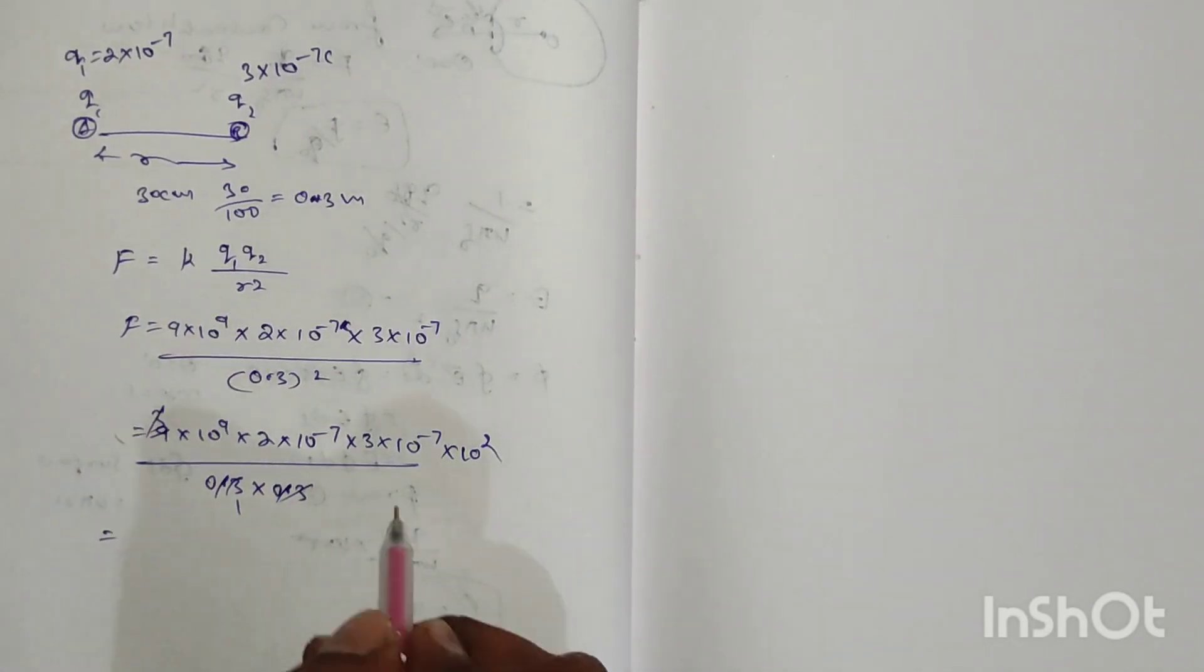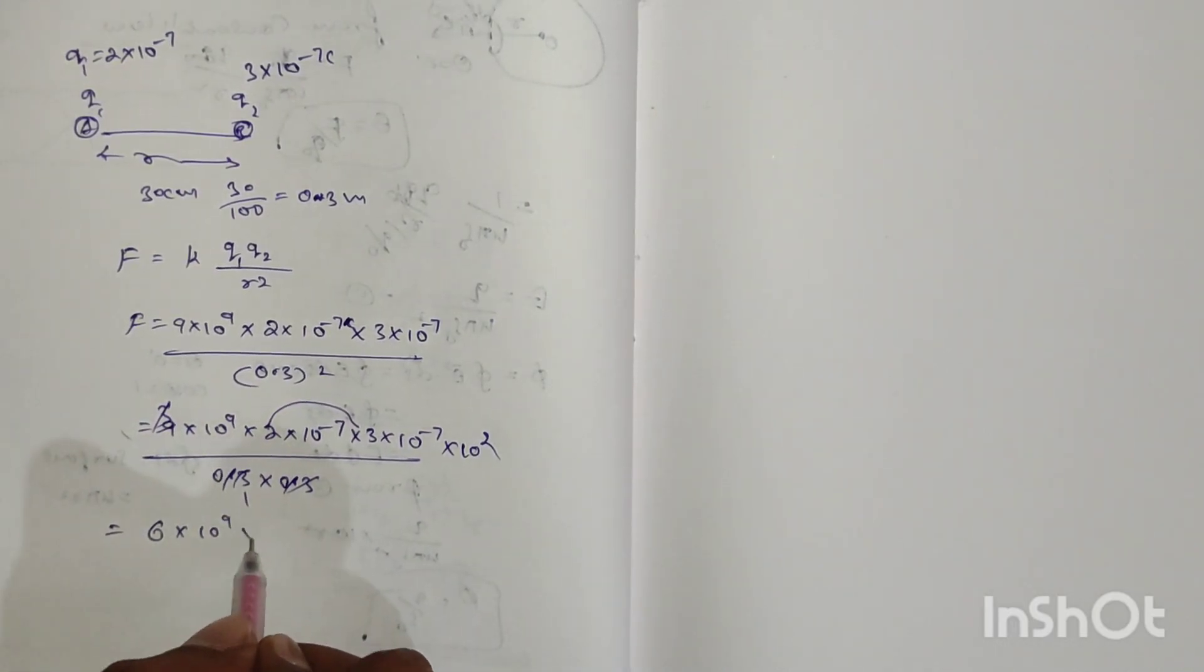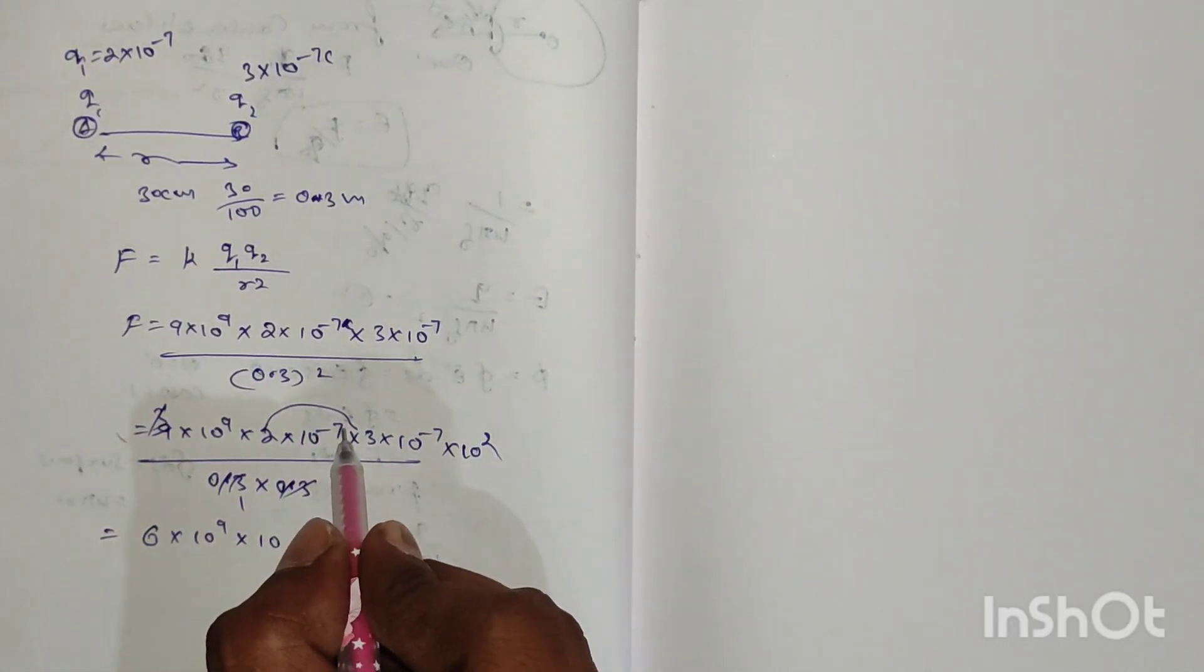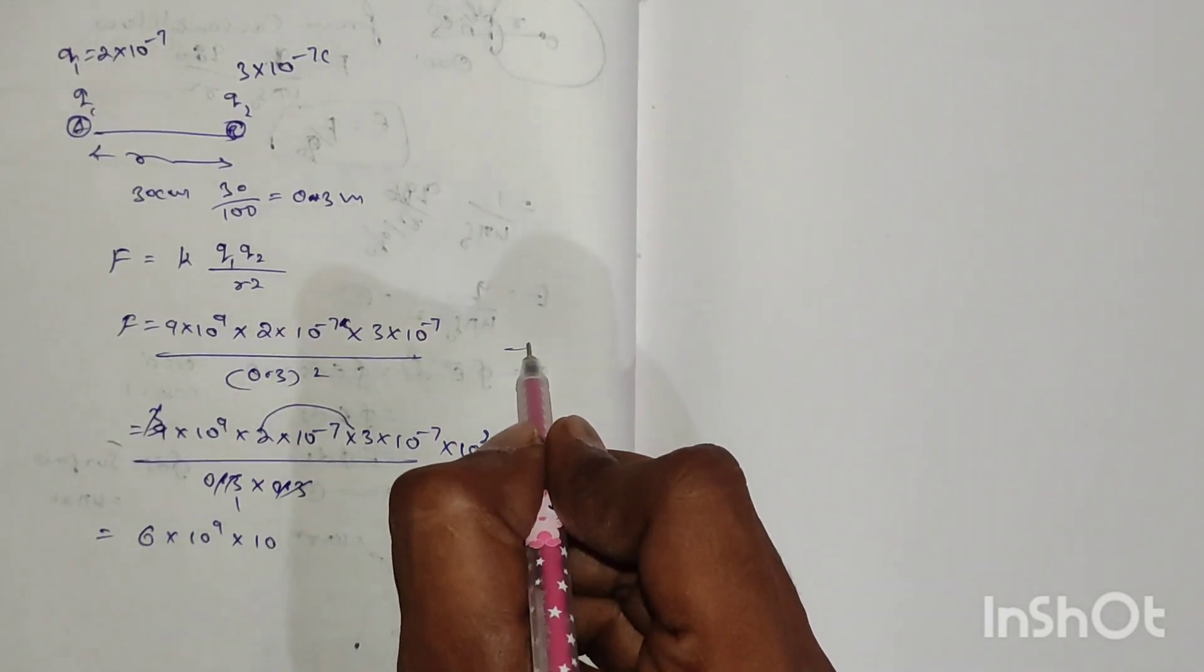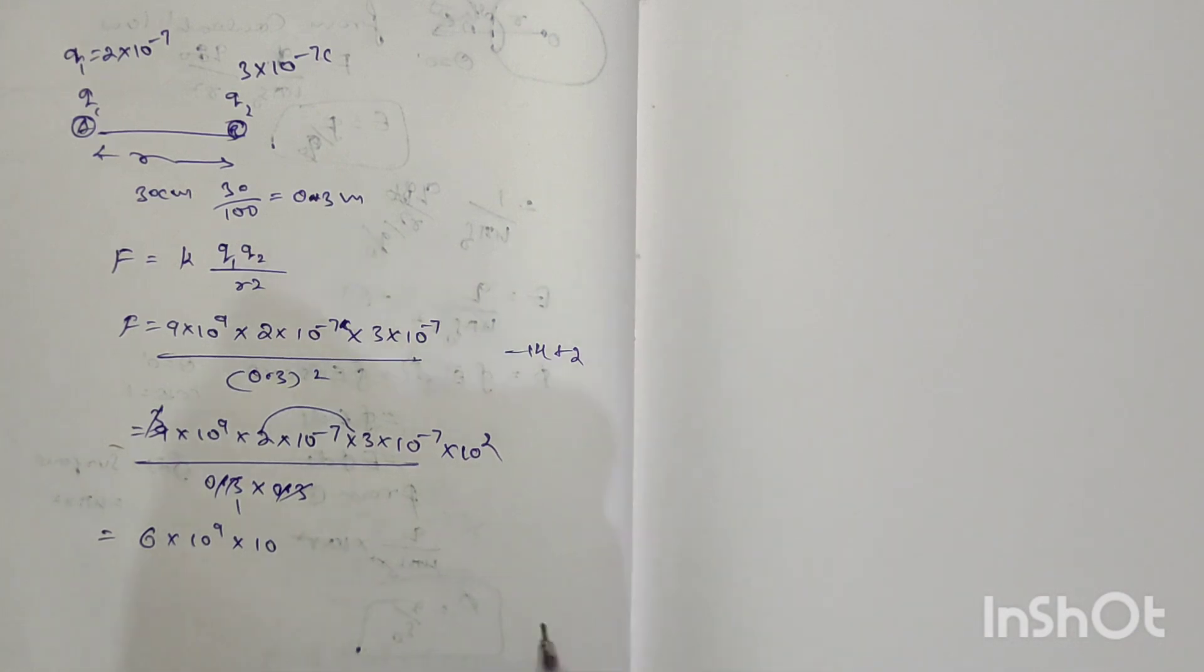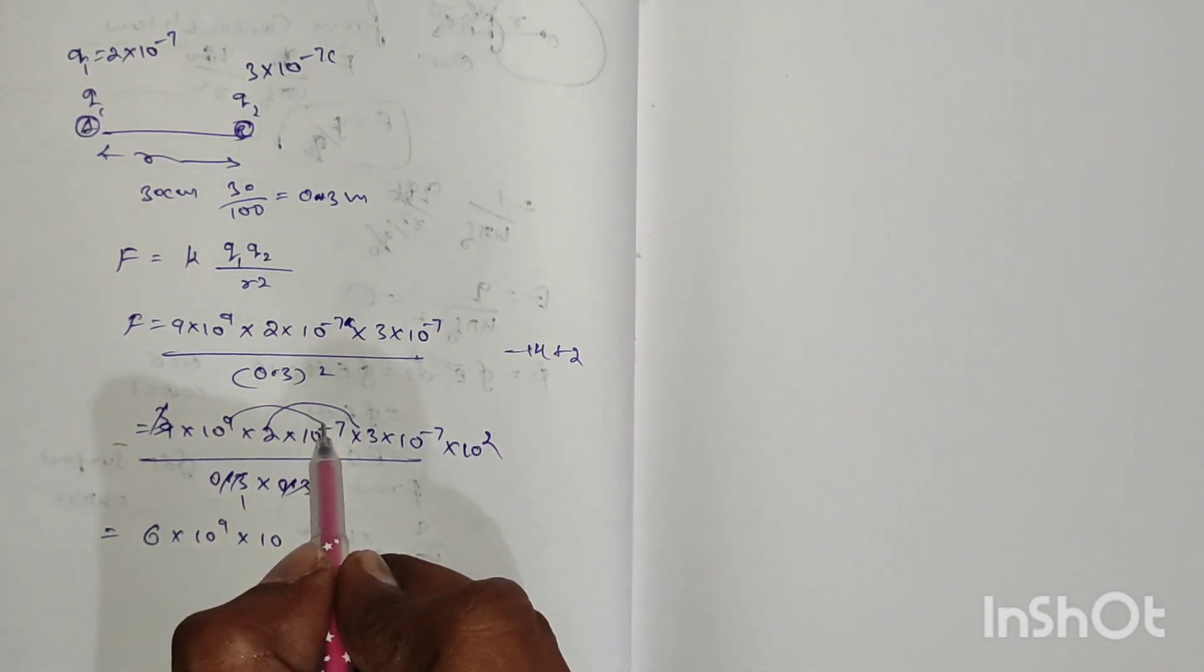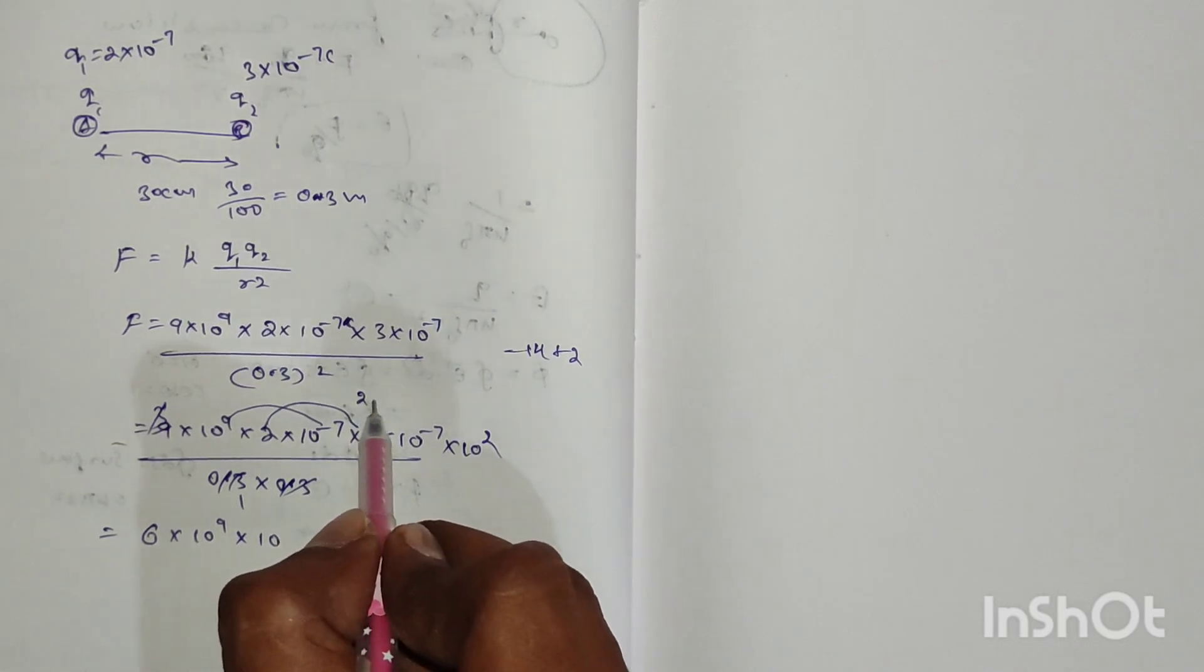9 cancels with 3×3. Then 2×3 equals 6, giving us 6×10^9 × 10^-7 × 10^-7 divided by 10^2. For the exponents: 9 - 7 - 7 + 2 equals -3.